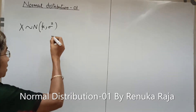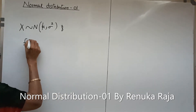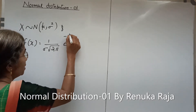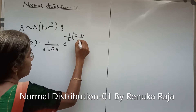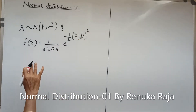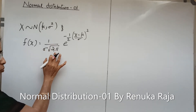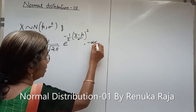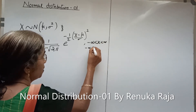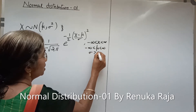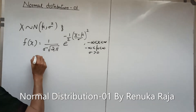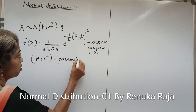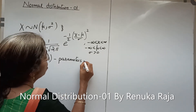That is, x follows Normal(mu, sigma square) if f of x equals 1 by sigma root of 2 pi, e raised to minus 1 by 2 times (x minus mu by sigma) whole square, where minus infinity less than x less than infinity, minus infinity less than mu less than infinity, and sigma greater than 0. The two parameters mu and sigma square are the parameters of normal distribution.